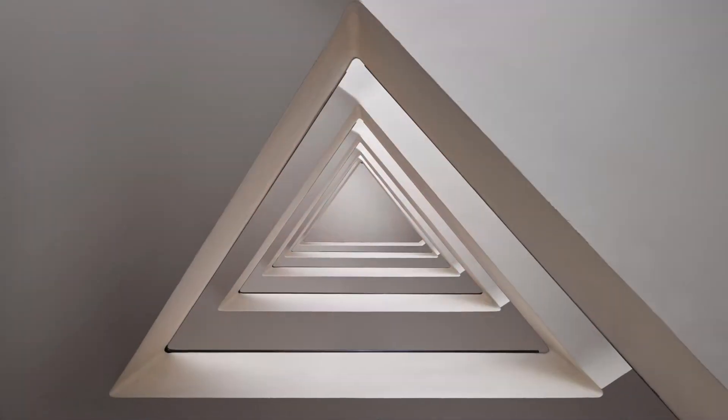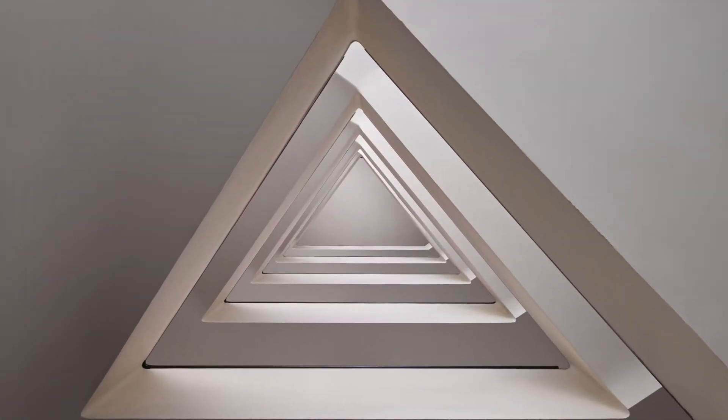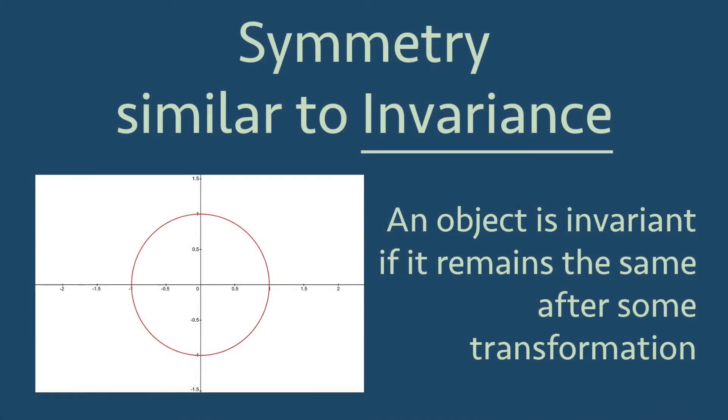Symmetry is sometimes an idealized quality in the visual arts, where objects are deemed more beautiful or harmonious when they exhibit symmetry. Symmetry also relates to invariance. When we say an object has invariance, it means that it is unchanged after some transformation.